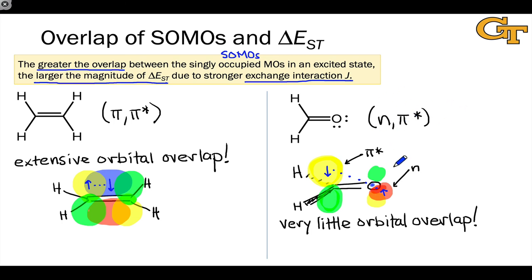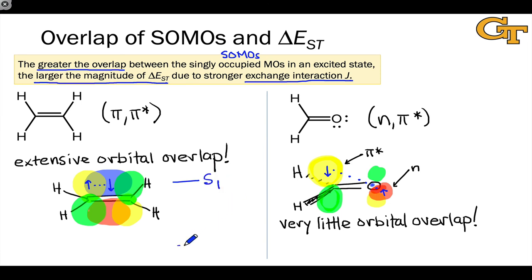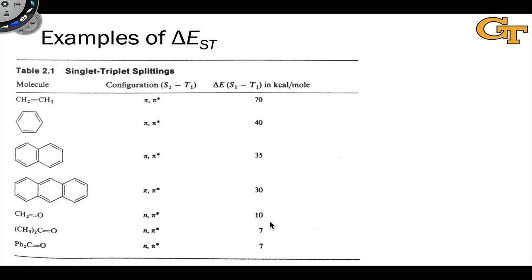The story is very different for the pi-pi-star excited state of the carbonyl group, where — just like the ethylene case — we have profound orbital overlap. The major conclusion from this analysis is consistent with the experimental result: the S1 and T1 states for ethylene are much farther apart in energy than the S1 and T1 states for formaldehyde, which are much closer in energy. Going back to the table, this bears out: for formaldehyde, delta EST is only 10 kilocalories per mole, while for ethylene it's way up at 70 kilocalories per mole.